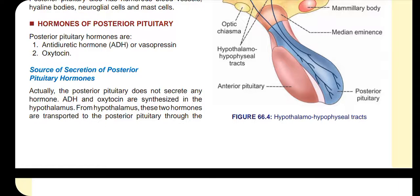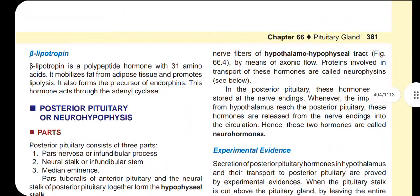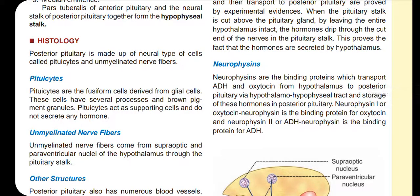Regarding the source of posterior pituitary hormones: first of all, the hormones are synthesized in the hypothalamus. They are transported via the hypothalamo-hypophysial tract to the posterior pituitary gland. Oxytocin and vasopressin are synthesized in the hypothalamus. The proteins involved in binding these hormones are called neurophysins.